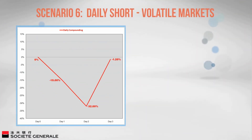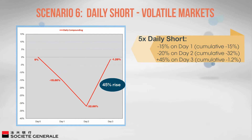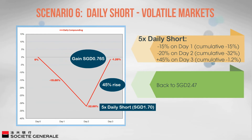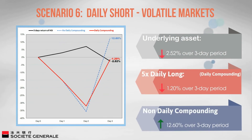Daily short — volatile market: During a volatile market, the five times daily short fell 15% on day one and 20% on day two before rising 45% on day three. The 45% rise on day three only takes five times daily short back to a value of 2.47 Singapore dollars, because it was only valued at 1.77 Singapore dollars when it began to recover. As such, the 45% gain only amounted to 0.765 Singapore dollars (1.7 Singapore dollars × 45%). The overall loss over the three-day period is 1.2%, whereas without compounding there would have been a gain of 12.6% (2.52% × 5).